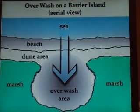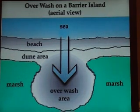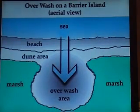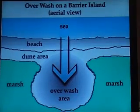This is an overview from an aerial view of how the water comes in from the sea or the gulf, hits the beaches, washes over, and forms an overwash in the back of the marsh areas.